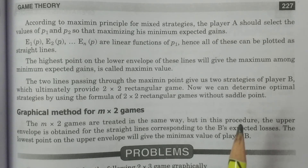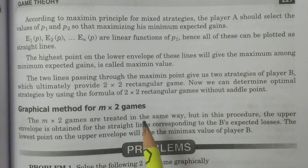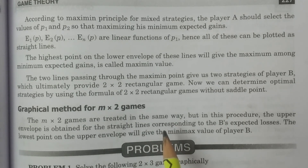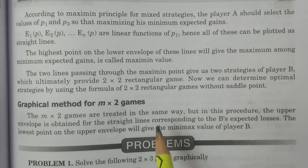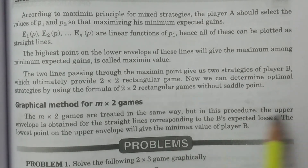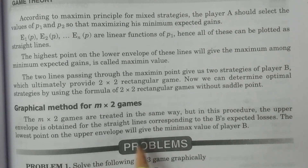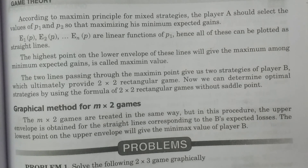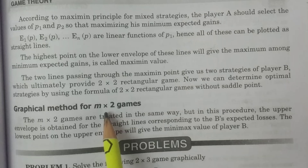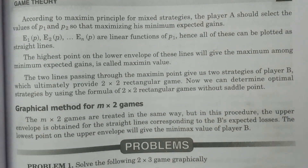For m×2 games, the process is similar but we consider Player B's pure strategies and Player A's expected loss. The linear functions E1(q), E2(q), and so on up to Em(q) are expressed in terms of q and plotted as straight lines. Here we consider the upper envelope, and the lowest point on the upper envelope gives the minimax value for Player B. The two strategies of Player A at that point reduce the m×2 game to a 2×2 game, which is then solved using the usual formula.